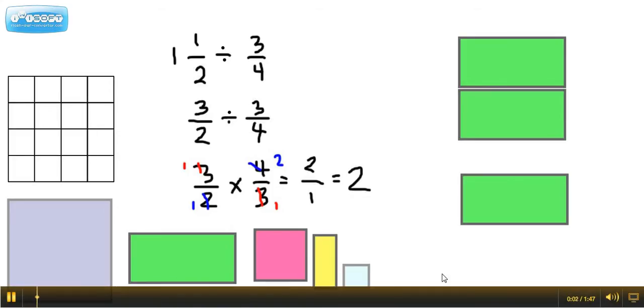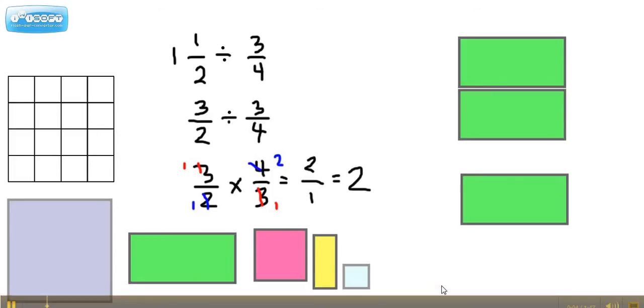Hey everybody, this is Ms. Dietrich. We're going to explore why one and a half divided by three-fourths ends up being two by using this model.